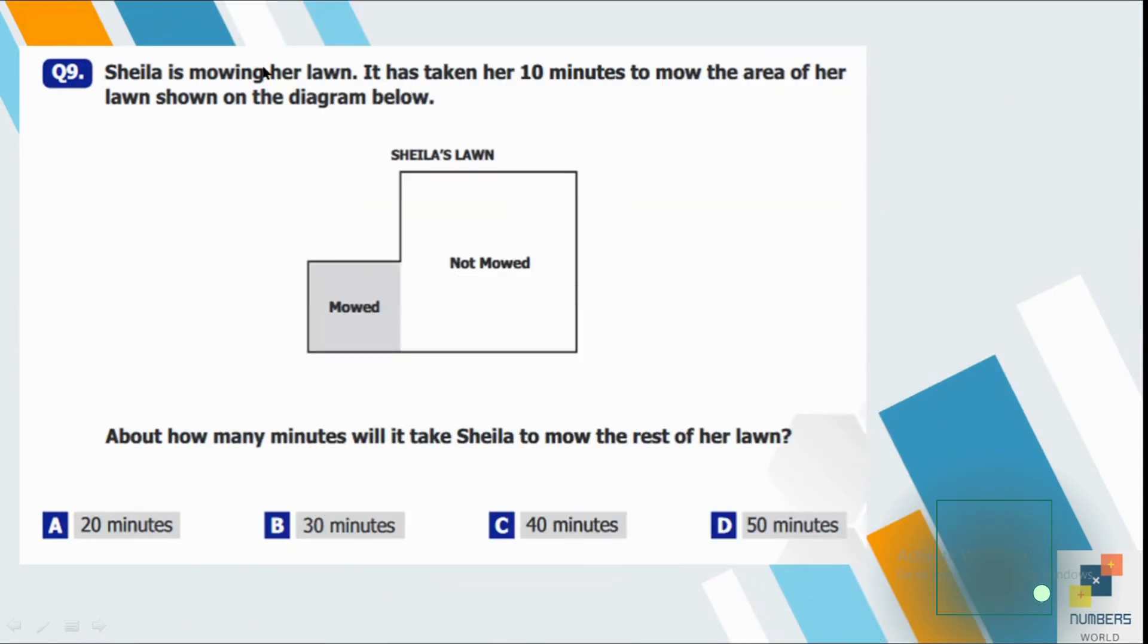Question number nine. Sheila is mowing her lawn. It has taken her 10 minutes to mow the area of her lawn shown on the diagram below. About how many minutes will it take Sheila to mow the rest of her lawn? So you can see the mowed part is highlighted in gray color and rest of the part of the lawn is also a kind of a square that is four times greater than the gray area. So four such parts can fix into it. So we can multiply four by 10 to find out the time that she requires to mow the rest of the lawn. So it's four 10s are 40.